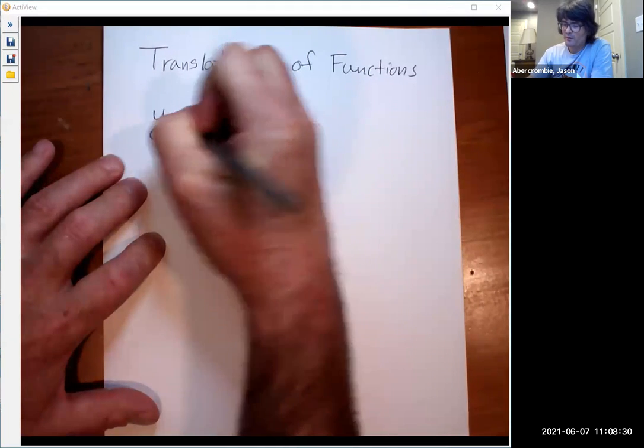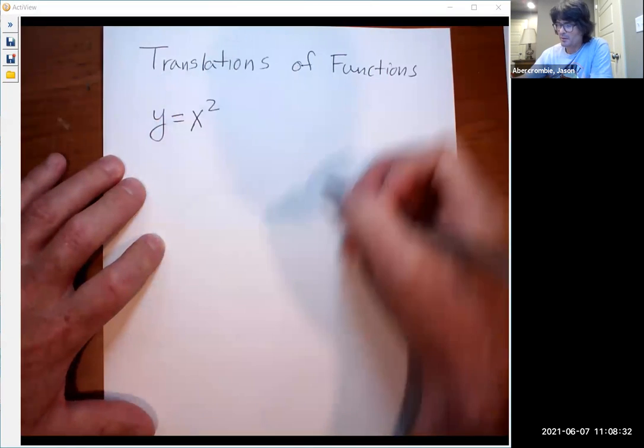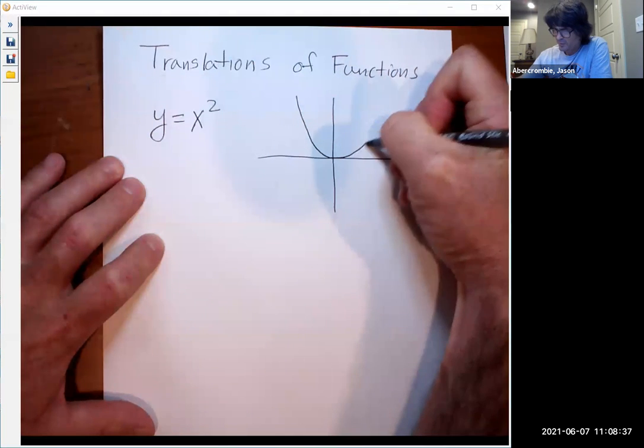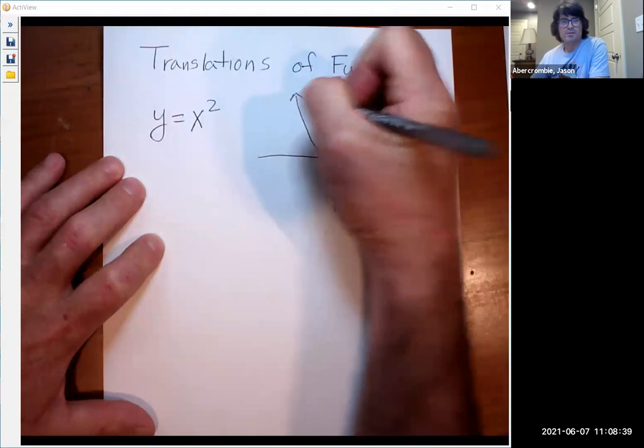We'll start out with just a very familiar function, y equals x squared. That is just kind of your standard parabola that has a vertex at 0, 0, kind of like that.